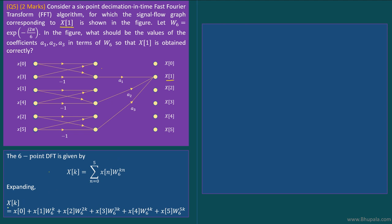So what do we get? X(1) turns out to be - note that we have replaced k with 1 - X(0) + X(1)W6 + X(2)W6^2 and so on. If you do substitution for W6^3...